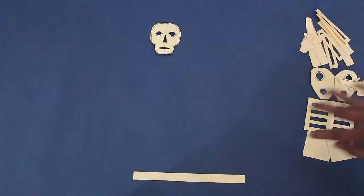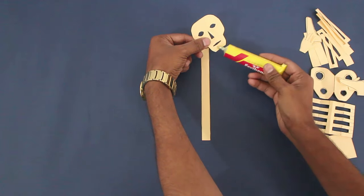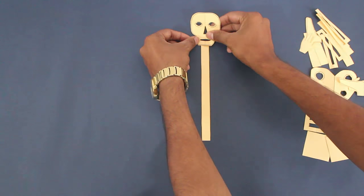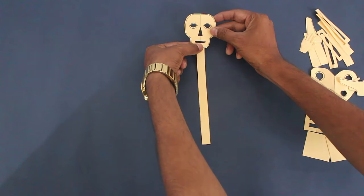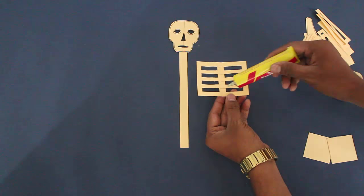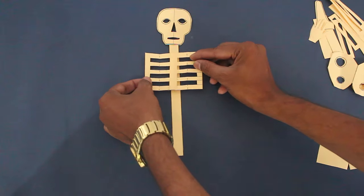Then stick the parts to complete the skeleton. Start by sticking the skull on top of the vertical strip. Then stick the ribcage and finally the pelvis.